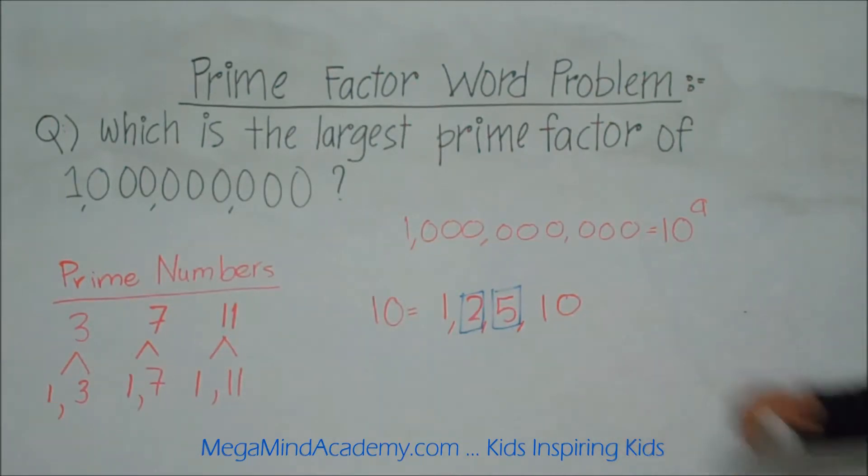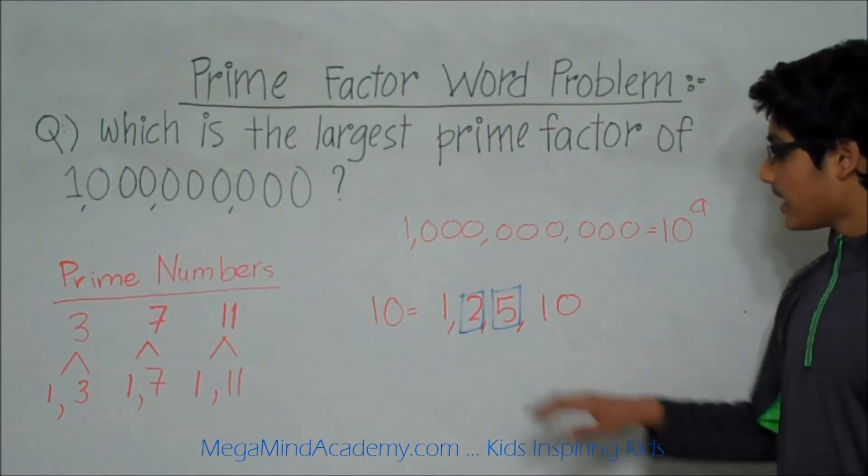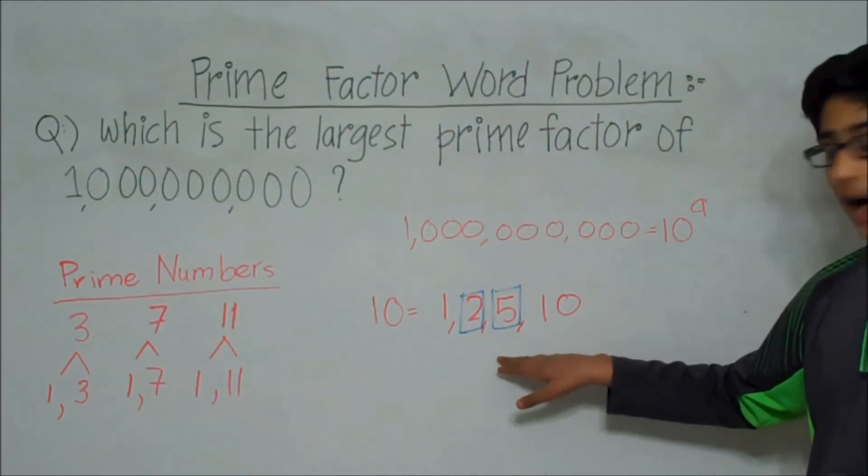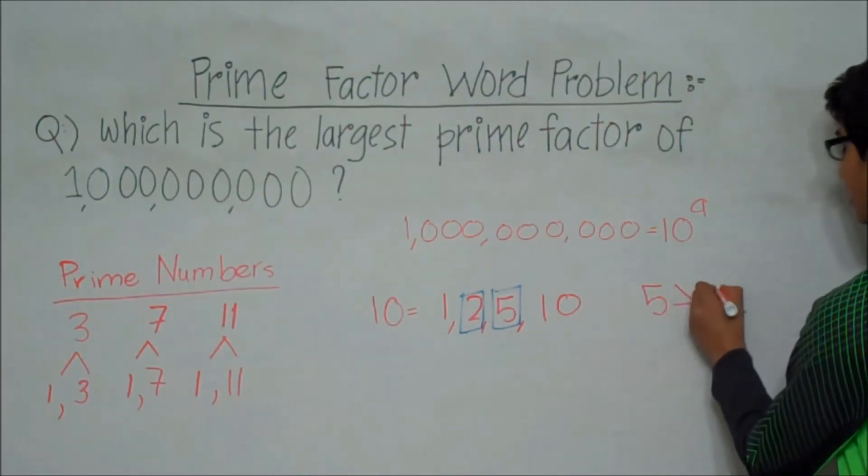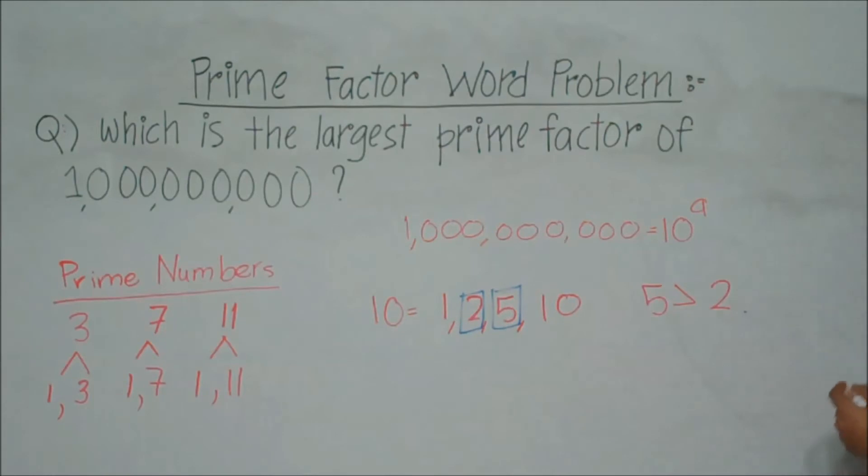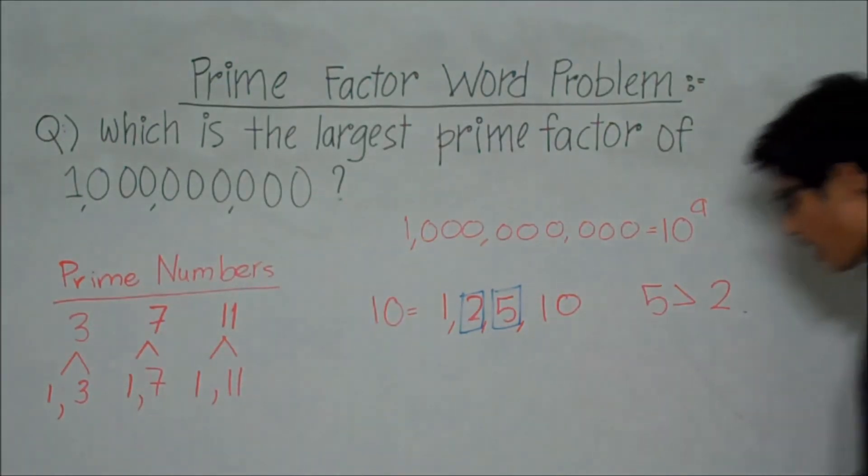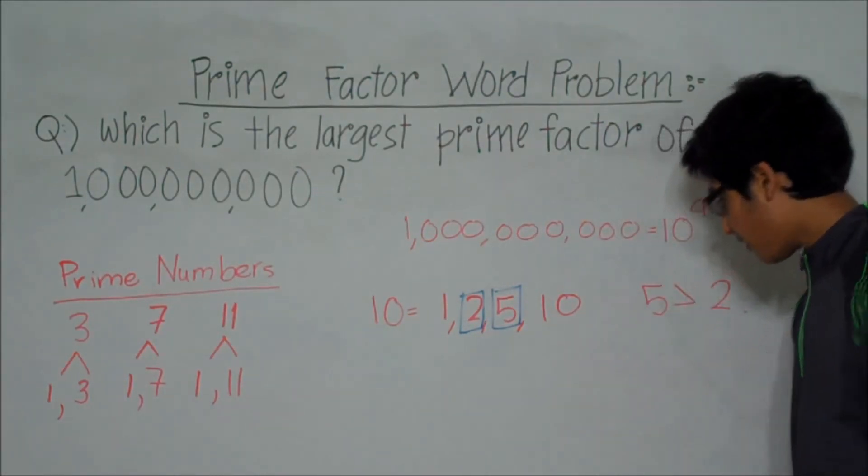We need to find the largest prime factor of 1 billion. We can see from this example that 5 is larger than 2, or greater than 2. So the answer to this problem is 5.